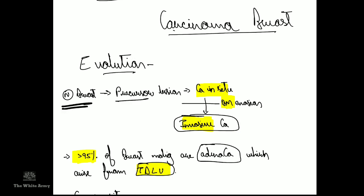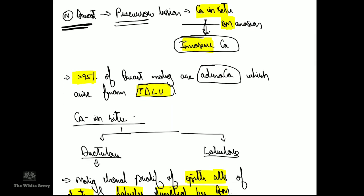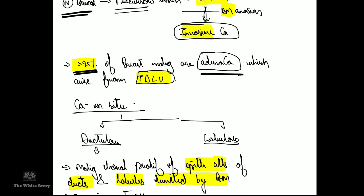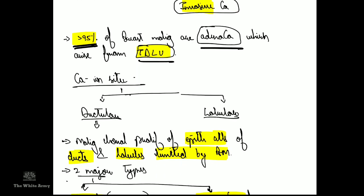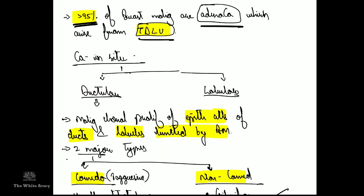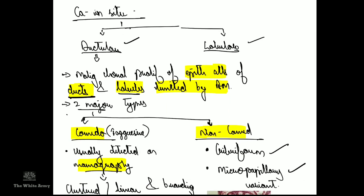Now coming to carcinoma of the breast: the evolution goes from normal breast to a precursor lesion, to carcinoma in situ, then erosion of the basement membrane and invasive carcinoma. Greater than 95% of breast malignancies are adenocarcinomas arising from the terminal duct and lobular unit. Carcinoma in situ can be of two types: ductal carcinoma in situ (DCIS) and lobular carcinoma in situ (LCIS). In DCIS, there is malignant clonal proliferation of epithelial cells limited by the basement membrane. DCIS can be comedo or non-comedo, with comedo being more aggressive.